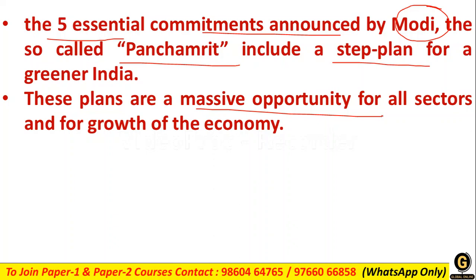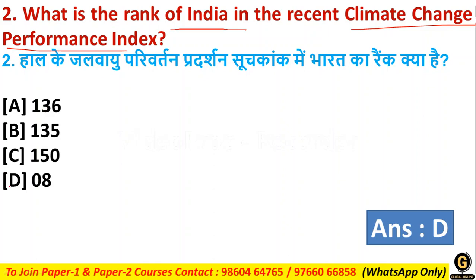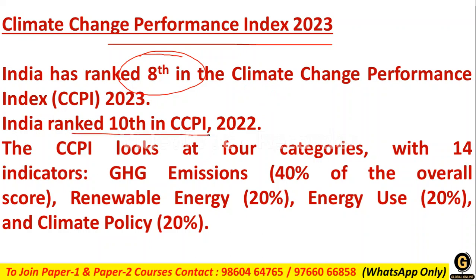Question two: What is the rank of India in the recent Climate Change Performance Index (CCPI)? Options: (a) 136, (b) 135, (c) 150, (d) 8. The right answer is option D — 8th. India ranked 8th in CCPI 2023; in 2022 India's ranking was 10. The CCPI looks at four categories with 14 indicators: GHG emissions, renewable energy, energy use, and climate policy.